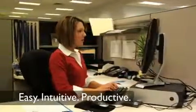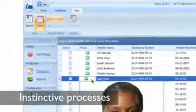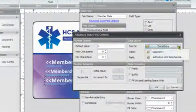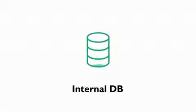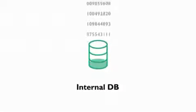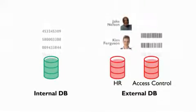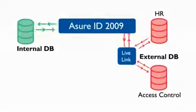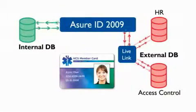In fact, everything has been so carefully thought out that Assure ID 2009 seems to anticipate what you need to do next. Assure ID 2009 totally demystifies database connectivity. Linking data fields on the card design to an external data source is now easier than ever. Assure ID 2009 works with its own internal, single-table database, and, depending on the edition you choose, can connect to multiple databases with multiple tables. Live Link gives you the flexibility of real-time data exchange. You can merge cardholder data from different and diverse database sources onto the same card.